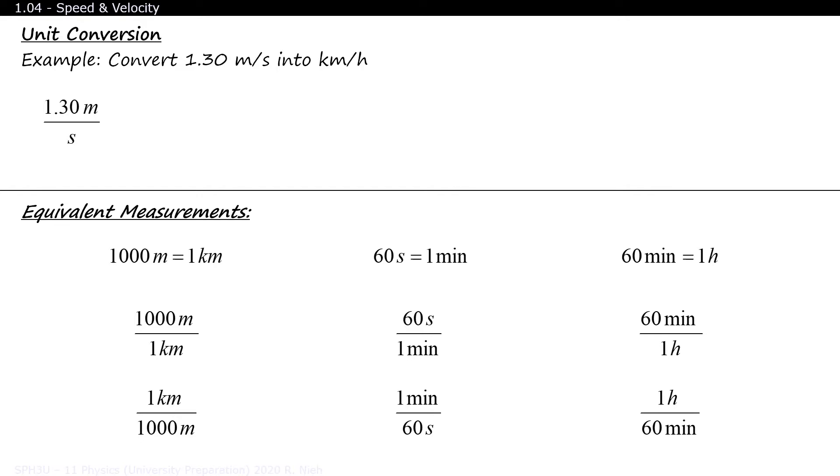Let's go back to the original question. We want to multiply the 1.3 meters per second by a fraction such that the meters in 1.3 meters disappears. It looks like this fraction will do the trick. Now, if we accidentally wrote this fraction the other way around, the meters would multiply with each other and would become meters squared, and that's not what we're looking for. So let's go back to the previous fraction.